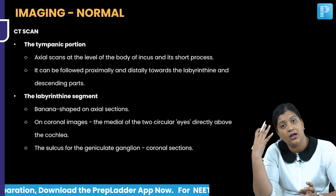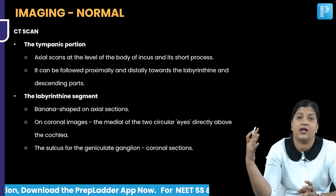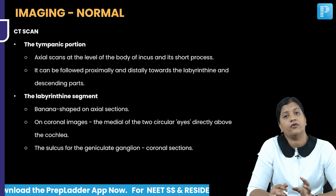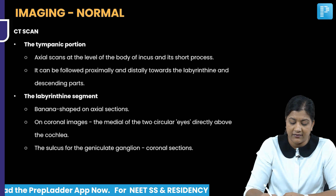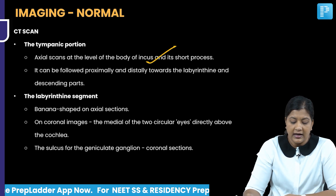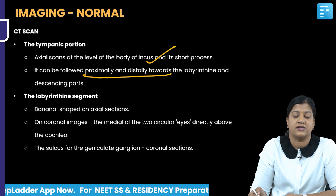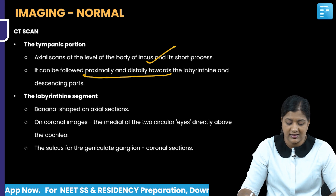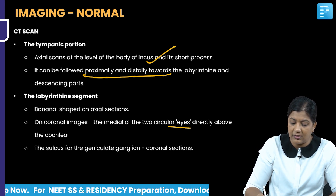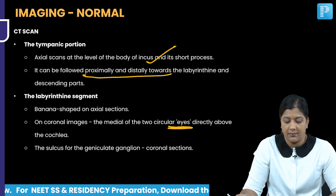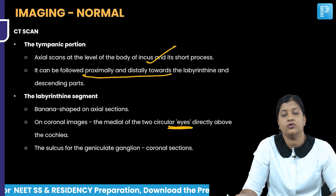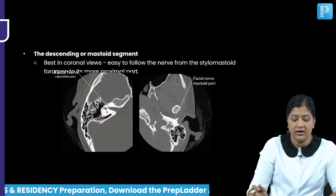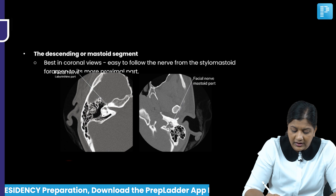For lesions in the intracranial segment, CT, MRI, and neurological examination are the investigation tools. On CT, the tympanic segment of the facial nerve is seen on axial sections at the level of the body and short process of the incus, and can be followed proximally toward the labyrinthine segment and distally toward the descending part. The labyrinthine segment appears banana-shaped on axial sections.